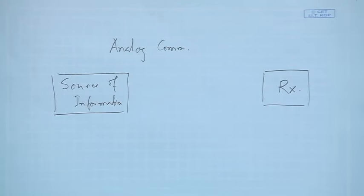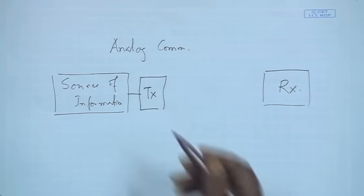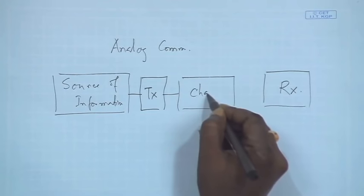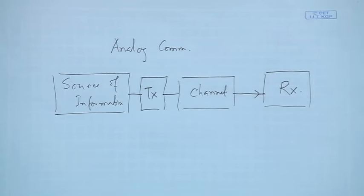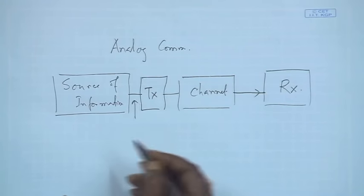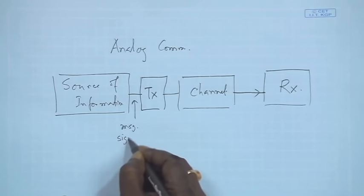In communication, what we mean is that we need to actually transfer this information as fast as possible to somebody else. There should be a recipient, or a receiver, which might be far away from the source. The source should be associated with a particular transmitter which will take that information, convert it into a particular form of signal, and transmit it through a media — which is very important in communication — called a channel. Through the channel, it will be transmitted to a distant receiver.